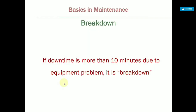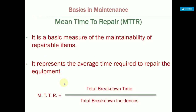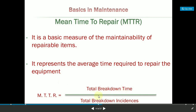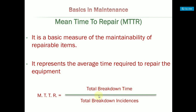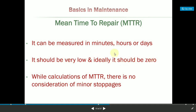Let me explain the key concepts covered in this video. Downtime of more than 10 minutes due to an equipment problem is classified as a breakdown. MTTR — mean time to repair — is calculated using the formula: total breakdown time divided by the number of breakdown incidents. The MTTR value should ideally be very low, ideally zero, and is measured in minutes, hours, or days.